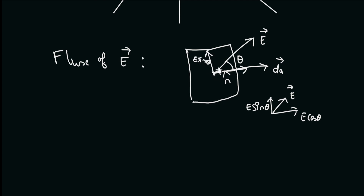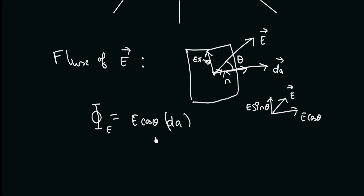Therefore, we can write the formula for flux, represented by the Greek letter Phi, as E cos theta times the area element dA. Another way to write it would be using the dot product notation: the electric field vector dot the area element vector. This is the formula for flux through area element dA. To find the total flux through a surface, we calculate the surface integral of E dot dA.